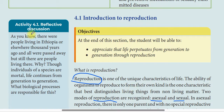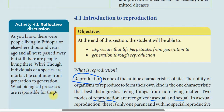As you know, there were people living in Ethiopia, or elsewhere, thousands of years ago, and all were passed away, but still there are people living there. Why? Because individual species are mortal, but life continues from generation to generation, and biological processes — reproduction — are responsible for that continuity.